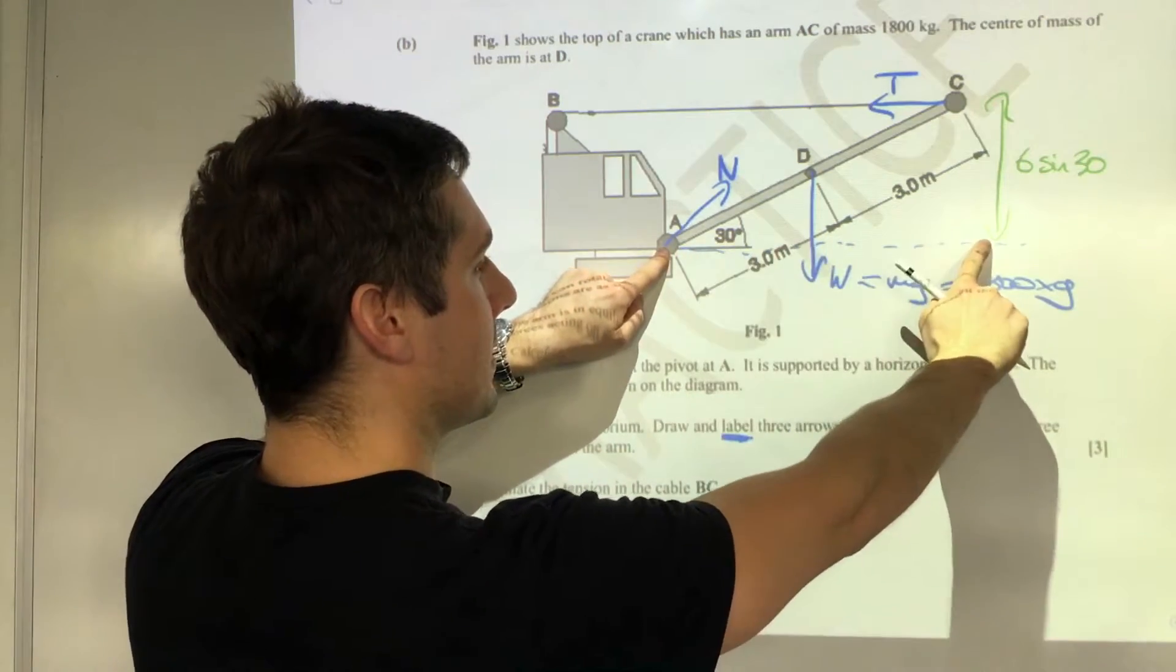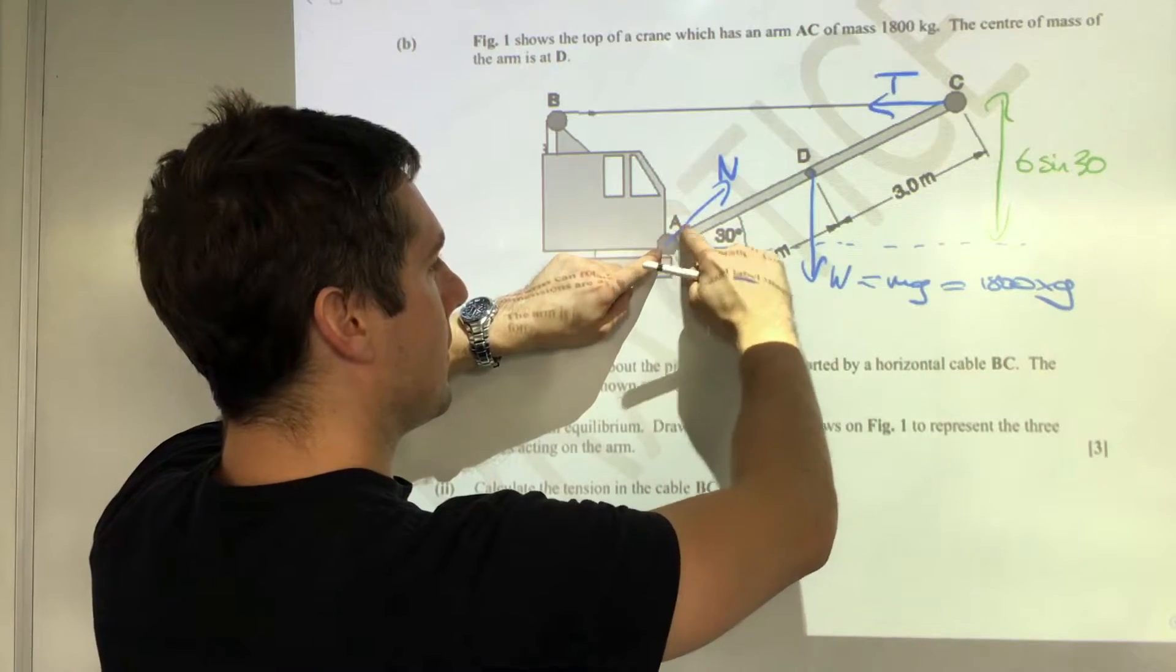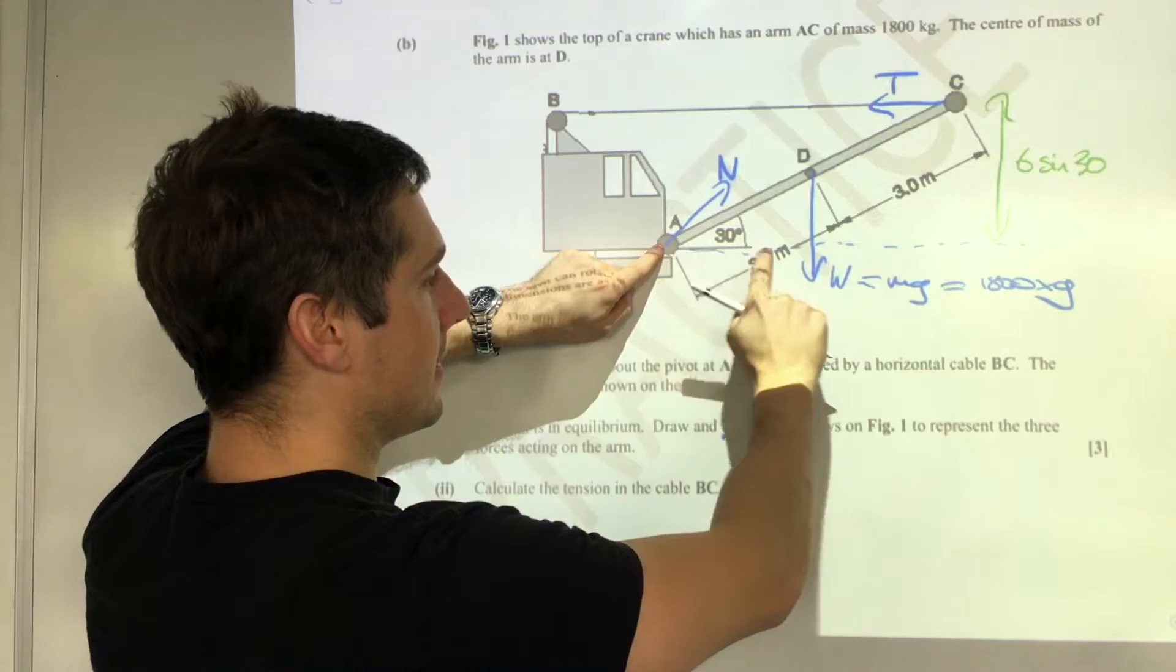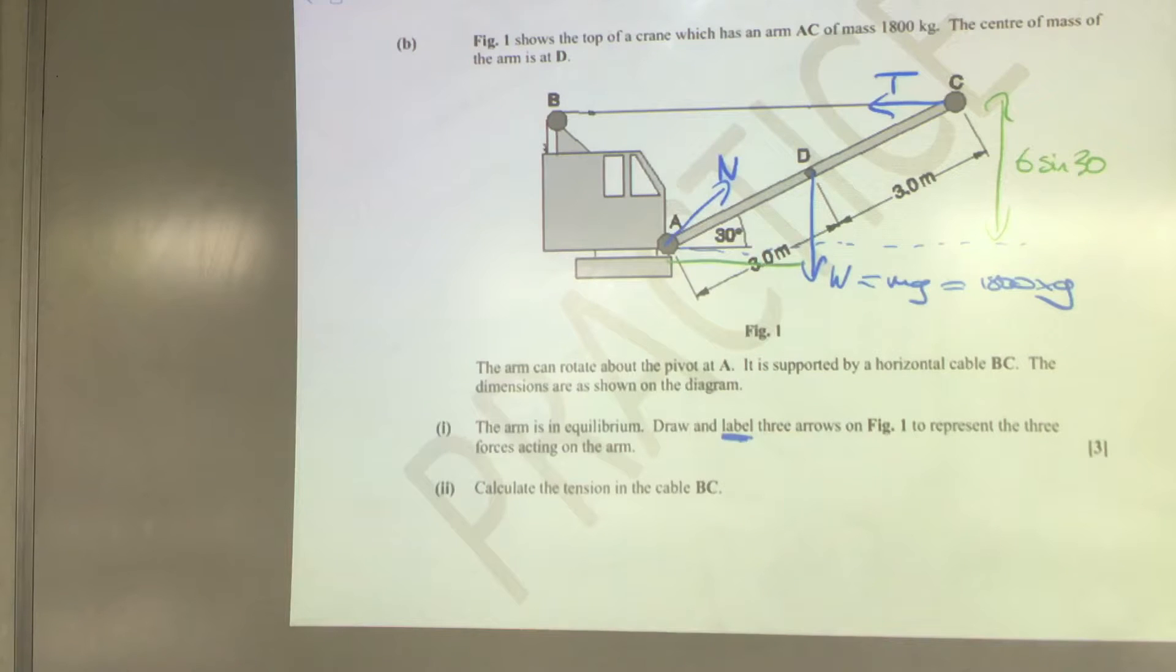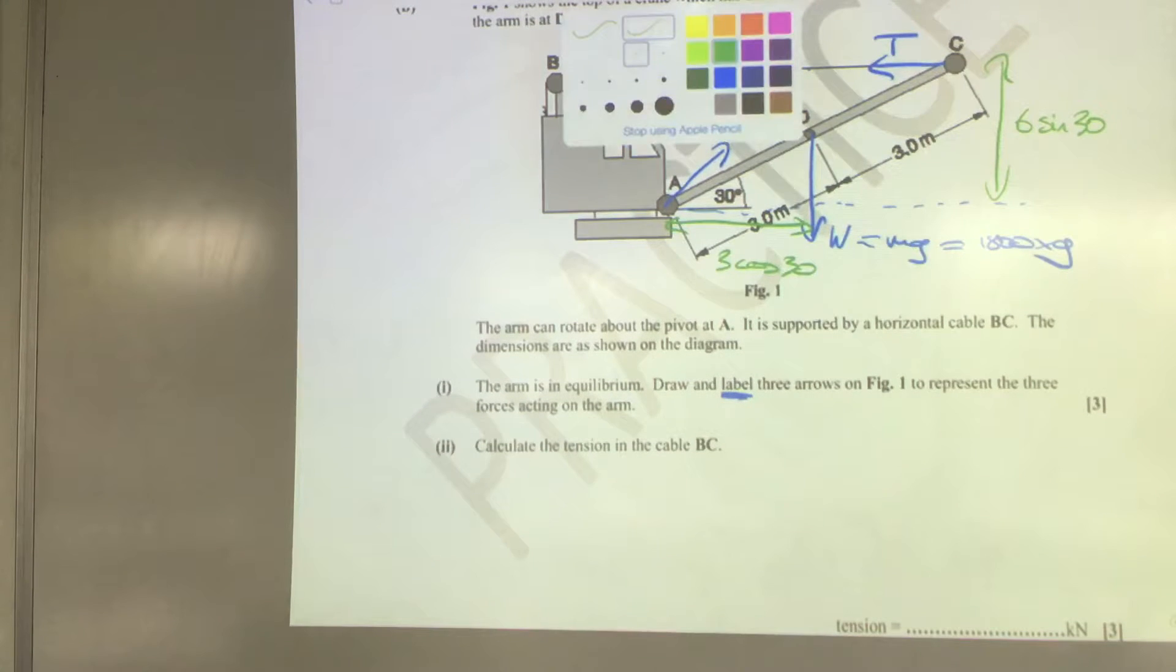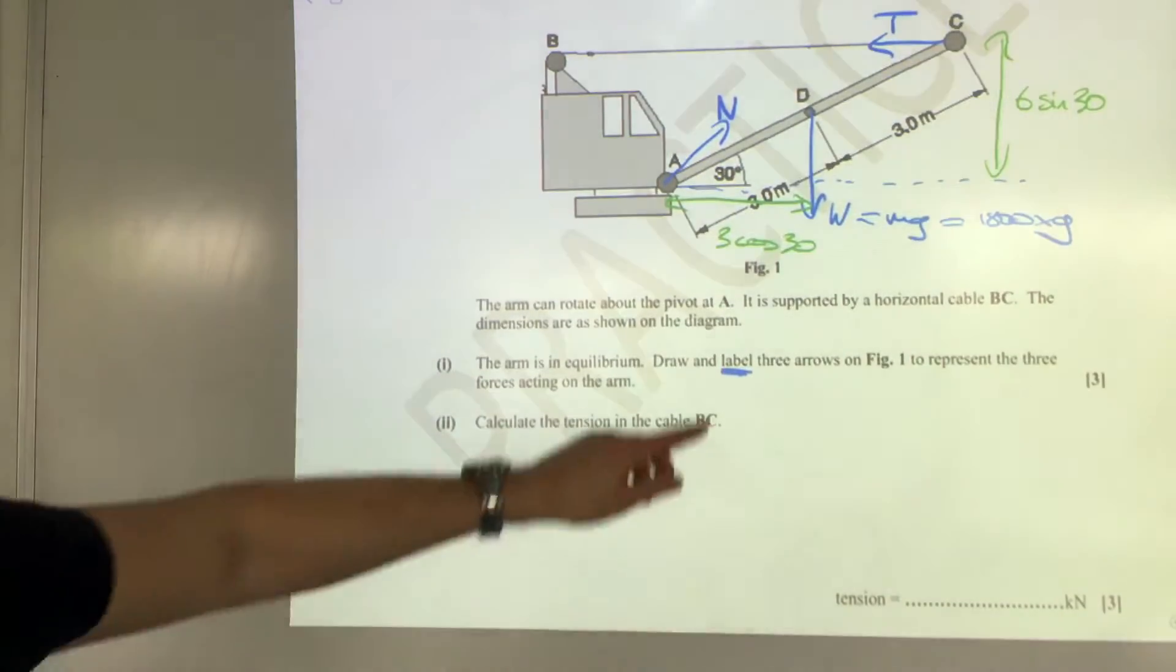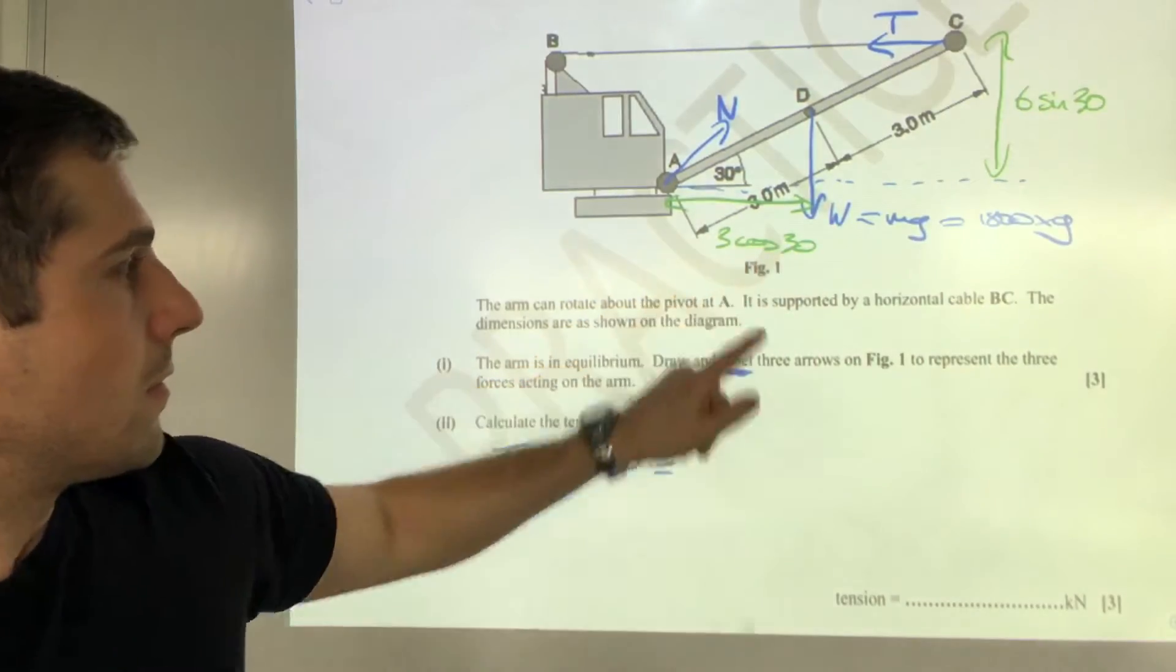Let's work out this perpendicular horizontal distance here whilst we're at it. That smaller triangle has a hypotenuse of three meters, so this distance here will be 3 cos 30. Now I can write my equation. The first one, the anti-clockwise, is T times 6 sin 30. The clockwise force is W times 3 cos 30.